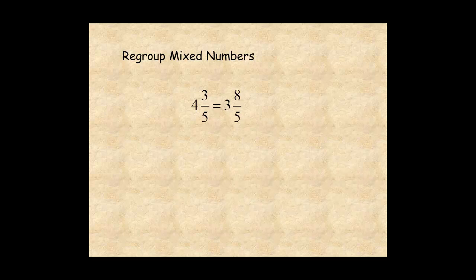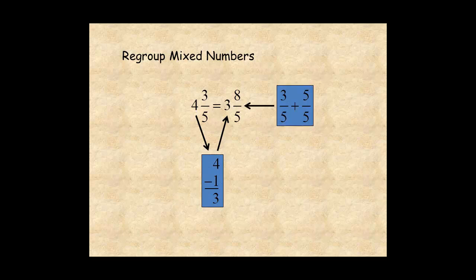So, for the mental math shortcut, subtract 1 from the whole number, 4 minus 1 equals 3, and add 1, 3 fifths plus 5 fifths, to the fraction.